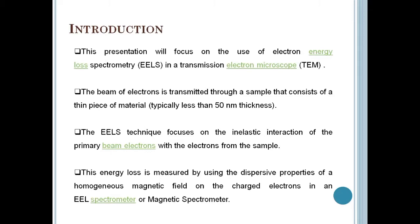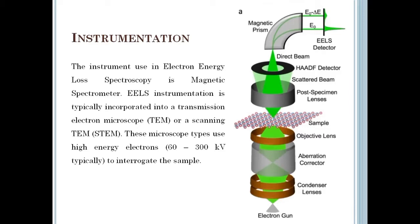Next is instrumentation, which is the main part of this presentation. The instrument used in EELS is a magnetic spectrometer. EELS instrumentation is typically incorporated into a TEM or STEM, and these microscope types use high electron energies of 60 to 300 kV to interrogate the sample. This is the diagram of the electron energy loss spectrometer instrument, which will be discussed in detail in the upcoming slides.